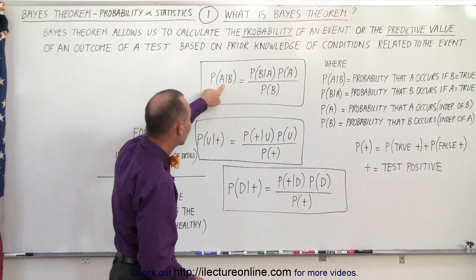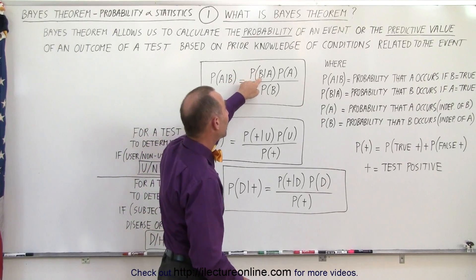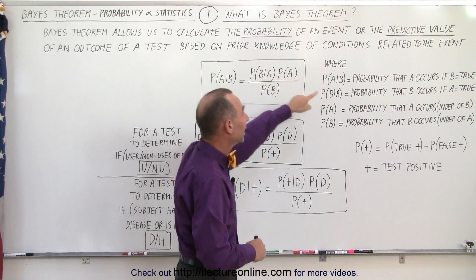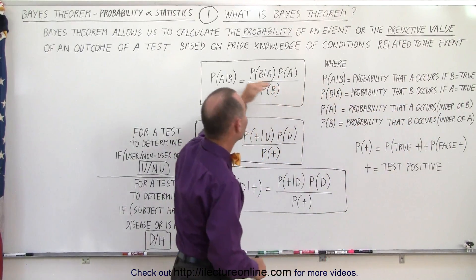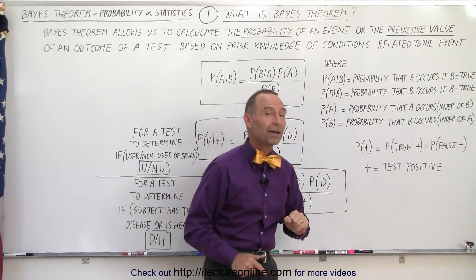So here we read the probability that A occurs if B is true is equal to the probability that B occurs if A is true times the probability that A occurs independent of B divided by the probability that B occurs independent of A.